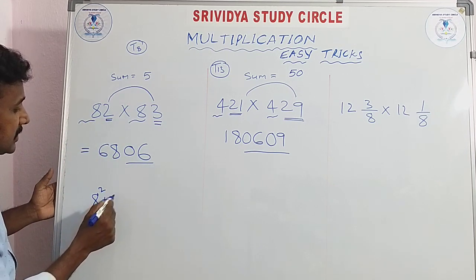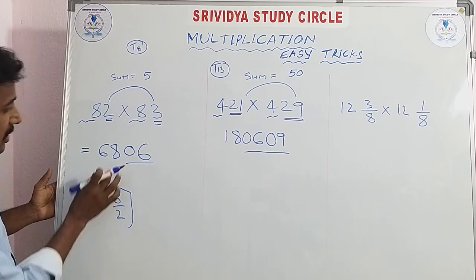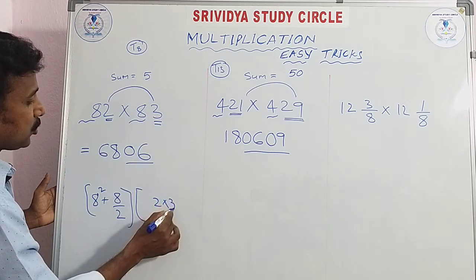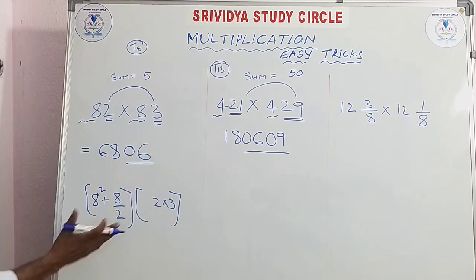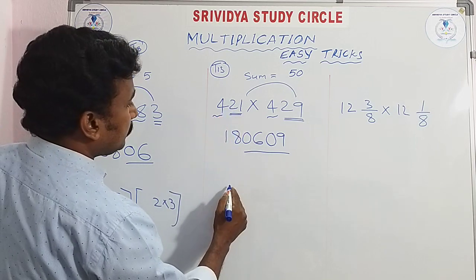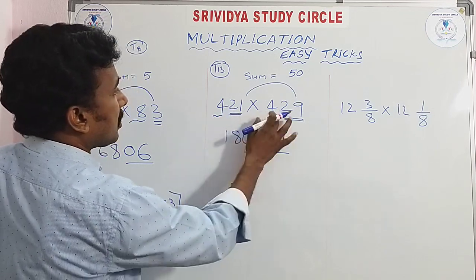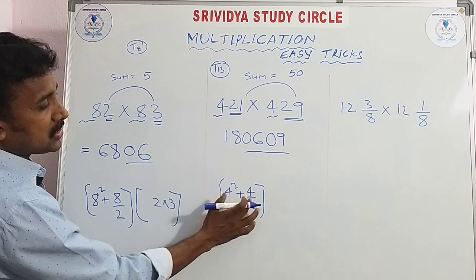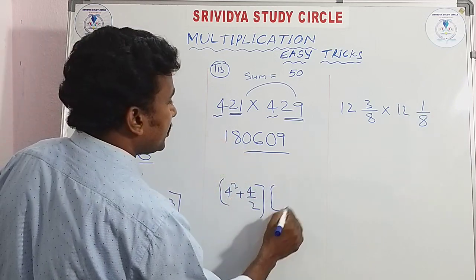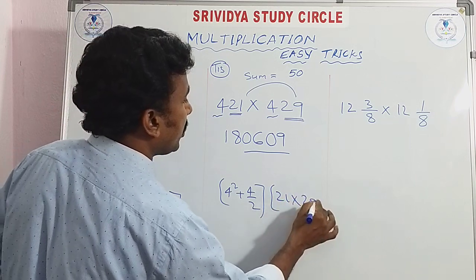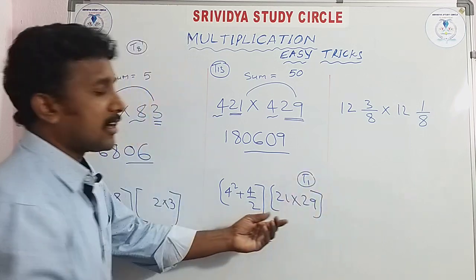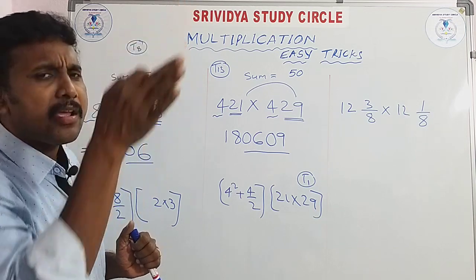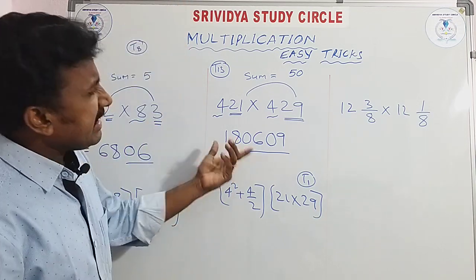The formula is: 8 squared plus 8 divided by 2. First part gives 68, and the second part is 2 × 3. This covers double digits and one digit — so 6886. Also: 4 squared plus 4 divided by 2 is 16 plus 2 = 18. The remaining part for 21 × 29: trick number 1 from the multiplication tricks playlist. There are 15 multiplication tricks — this is easy and useful for hundreds and thousands of problems.